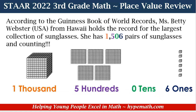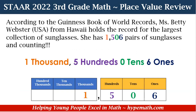Let's look at one more example. According to the Guinness Book of World Records, Ms. Betty Webster from Hawaii holds the record for the largest collection of sunglasses. She has 1,506 pairs of sunglasses and counting — that is a lot of sunglasses! So looking at our number in standard form, let's look at our place value blocks. We have 1 thousands block, 5 hundreds blocks. Do we have a tens block? No, we do not, because we have a 0 in our tens place, and we have 6 ones. On our place value chart: 1 in the thousands place, 5 in the hundreds place, 0 in the tens place, and 6 in the ones place.